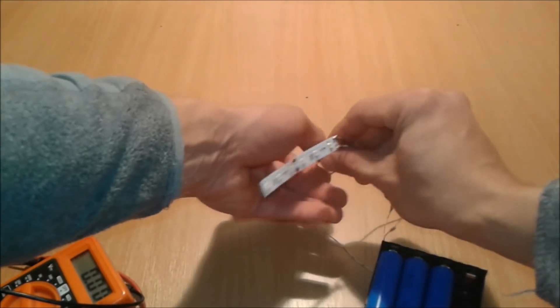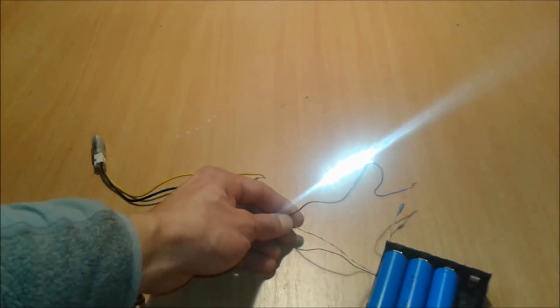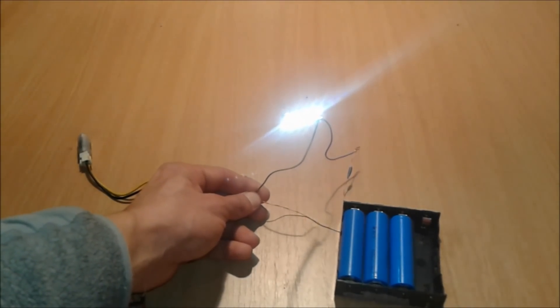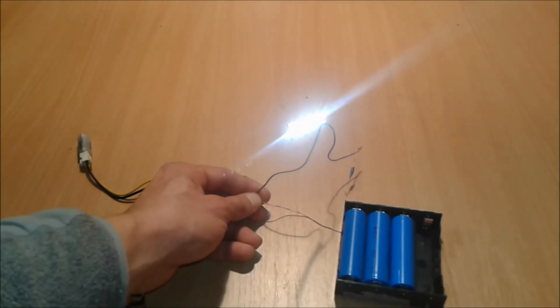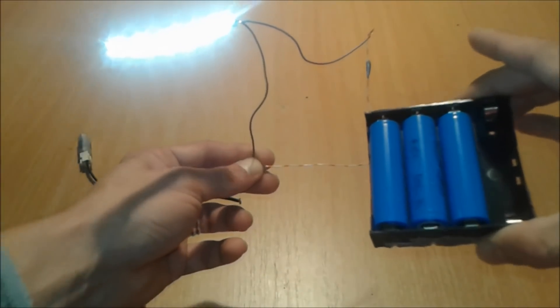This should be minus. Here we go friends, here we go. So we have managed to build a 12 volts battery out of these three 18650 cells.